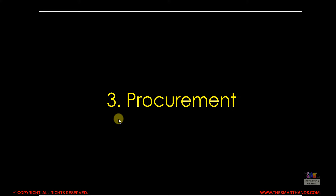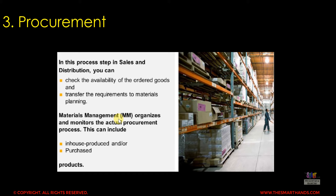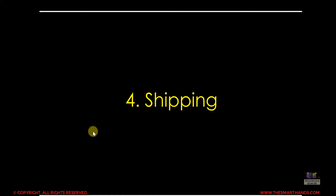The third process is procurement. Once we receive and create the order, the procurement department checks the availability of goods needed for the customer. If there is enough stock, goods can be sent directly. If not, requirements are sent to the materials management team, who plan procurement — either in-house production or purchasing from a vendor or third party. Once goods are ready, they are sent to the customer as part of the shipping step.